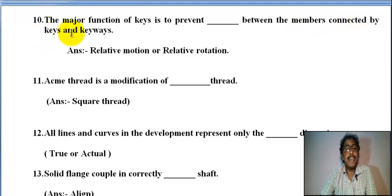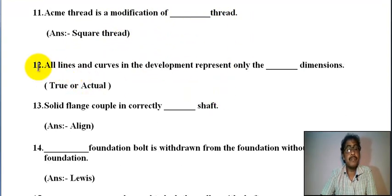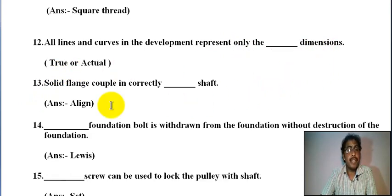Number eleven: acme thread is a modification of square thread. Number twelve: all lines and curves in the development represent only the true or actual dimension, actual length in development represent only the true or actual dimension.